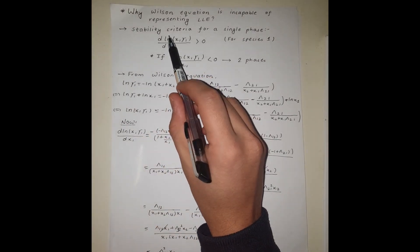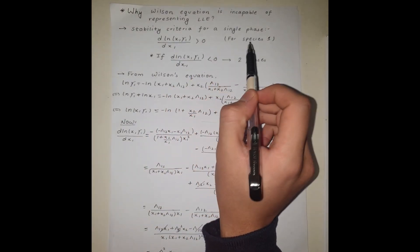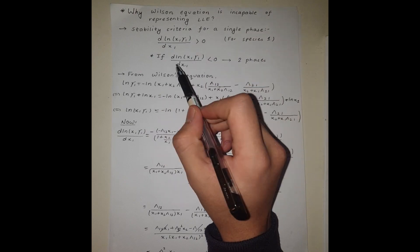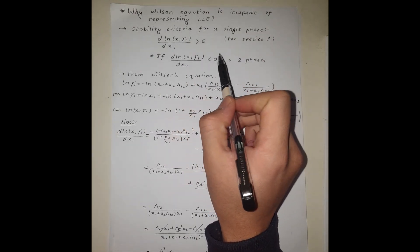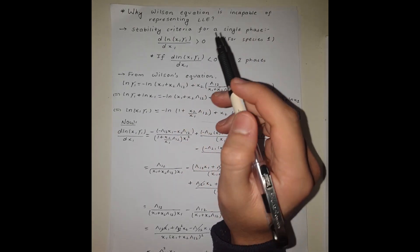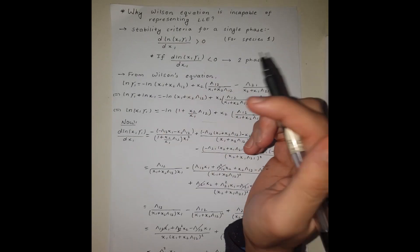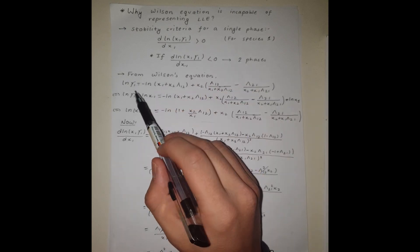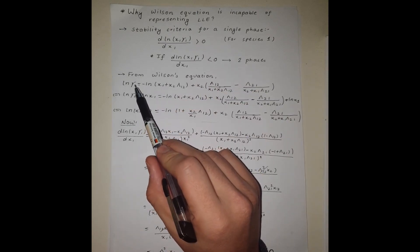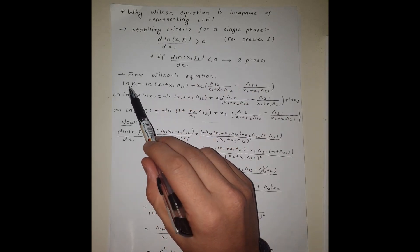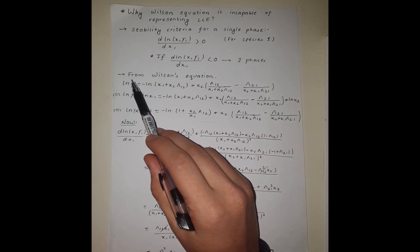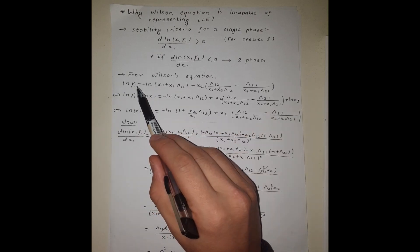So why is the Wilson equation incapable of representing liquid-liquid equilibrium? If this derivative is greater than zero we have a single phase, and if it is less than zero we have two phases — meaning partial or complete immiscibility. The expression for activity coefficient γ1 is obtained from the Gibbs-Duhem equation.